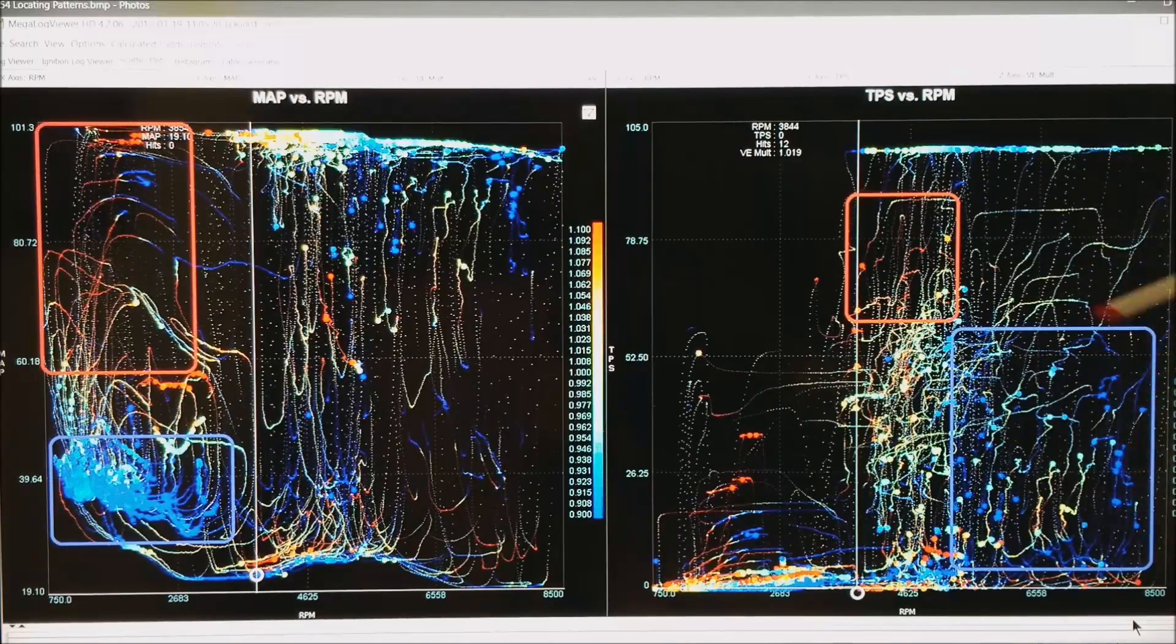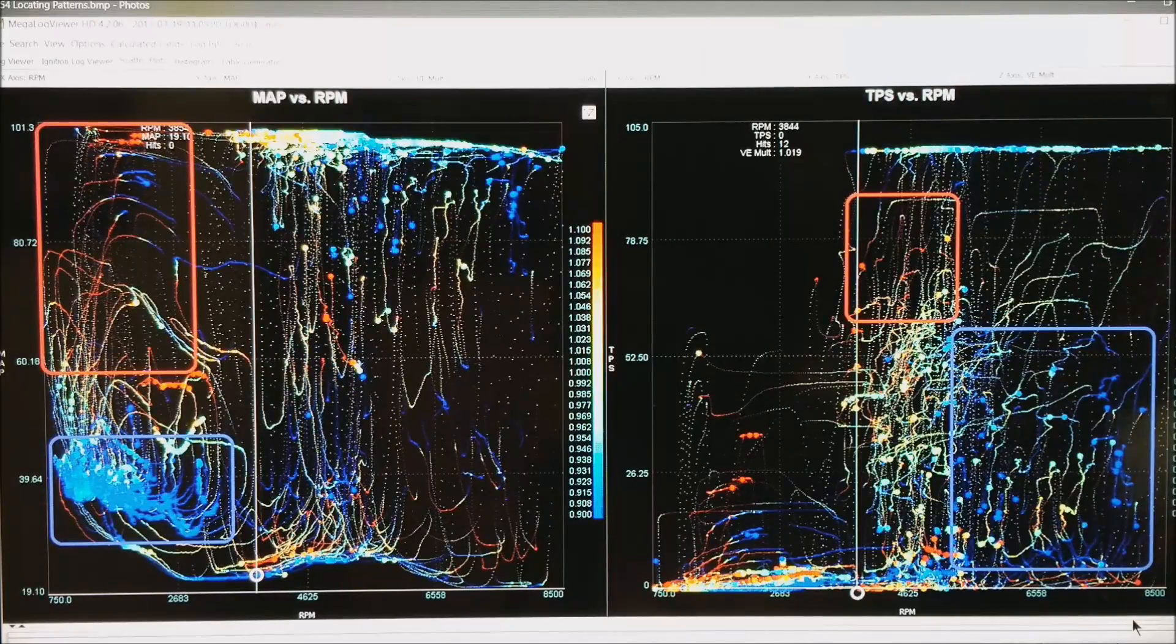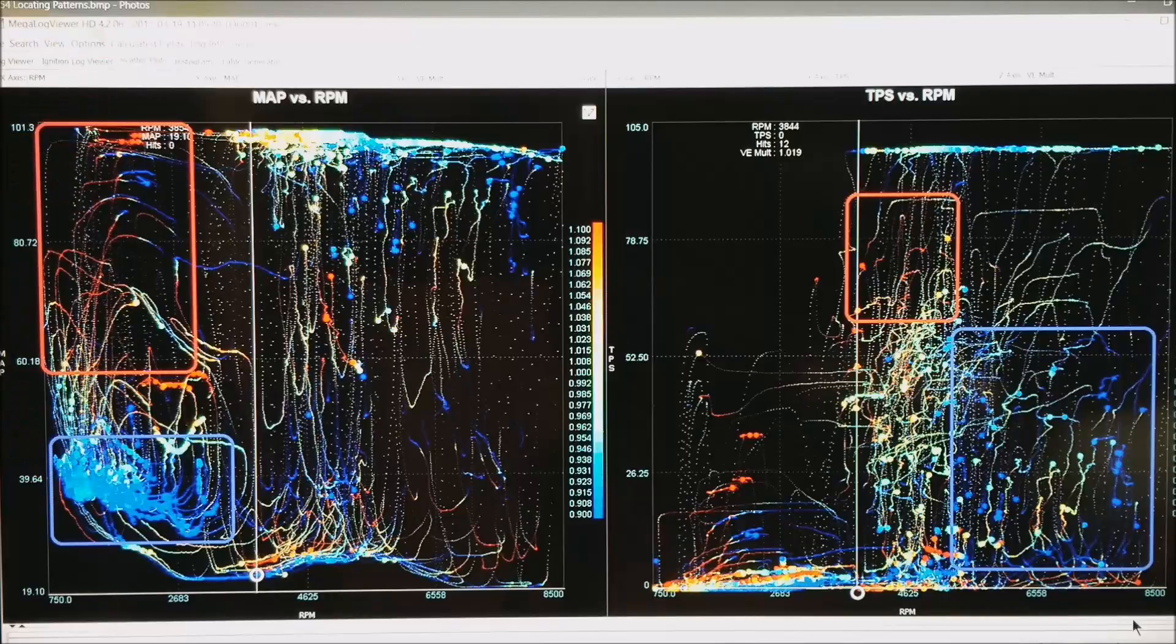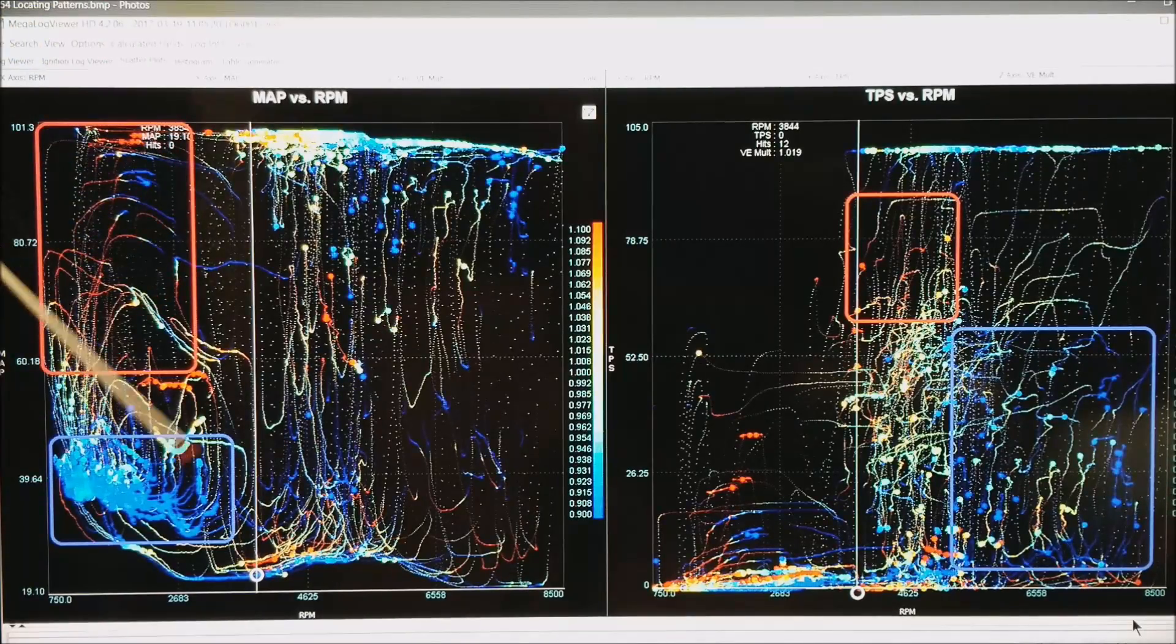So what we will do is correct our VE table on the Alpha N, the TPS-based table, up in this area. Then what we will do is come into the Speed Density table and adjust the bottom end.